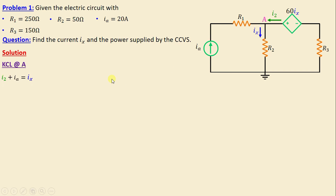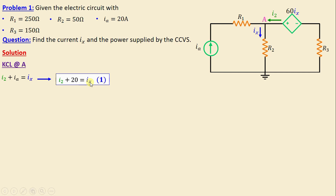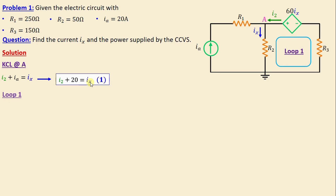We already know that ia is equal to 20 amps, so i2 plus 20 is equal to ix. This is equation one. Let's move on by applying Kirchhoff's voltage law in loop one. We can write: negative R2 times ix plus 60 ix minus R3 times i2 is equal to zero.